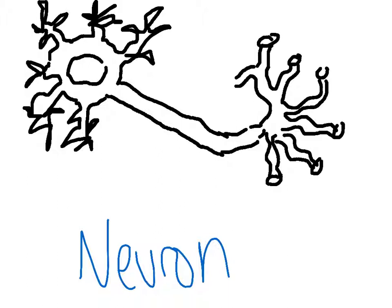Once the neurotransmitters go through the dendrites, they come to the cell body, which is this area around here. It's also called the soma.